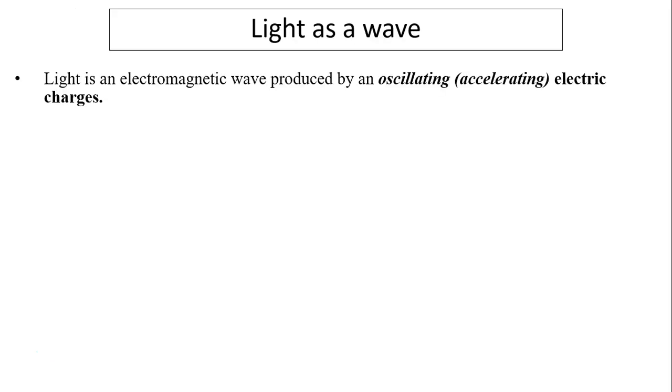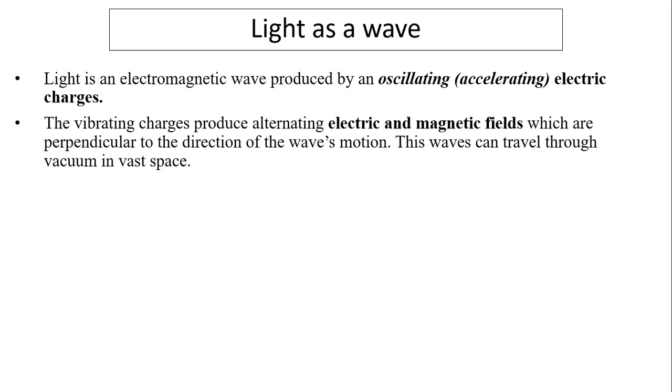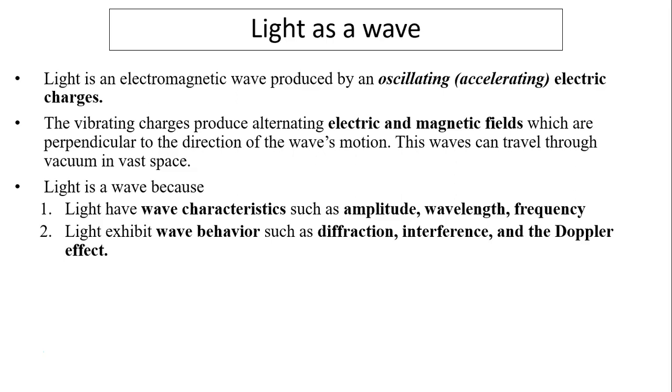Light as a wave. Light is an electromagnetic wave produced by an oscillating electric charge. The vibrating charge produces alternating electric and magnetic fields, which are perpendicular to the direction of the wave's motion. These waves can travel through vacuum. Light is a wave because light has wave characteristics such as wavelength and frequency. Light is a wave also because light exhibits wave behavior such as diffraction, interference, and Doppler effect. However, the wave model of light cannot explain interactions of light with matter.